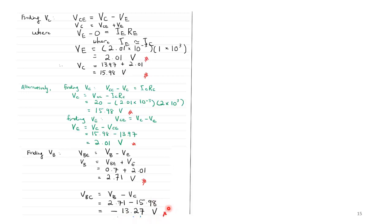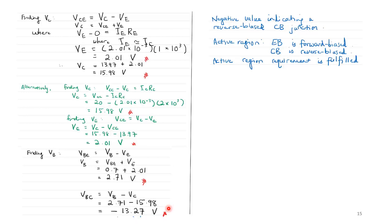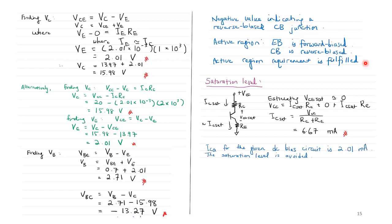The negative value for VBC is what we want: it confirms that the base-collector junction is reverse biased. For active region operation, the emitter-base junction must be forward biased (VBE = 0.7 V, confirmed) and the collector-base junction must be reverse biased (VBC = −13.27 V, confirmed). The active region requirement is fulfilled.